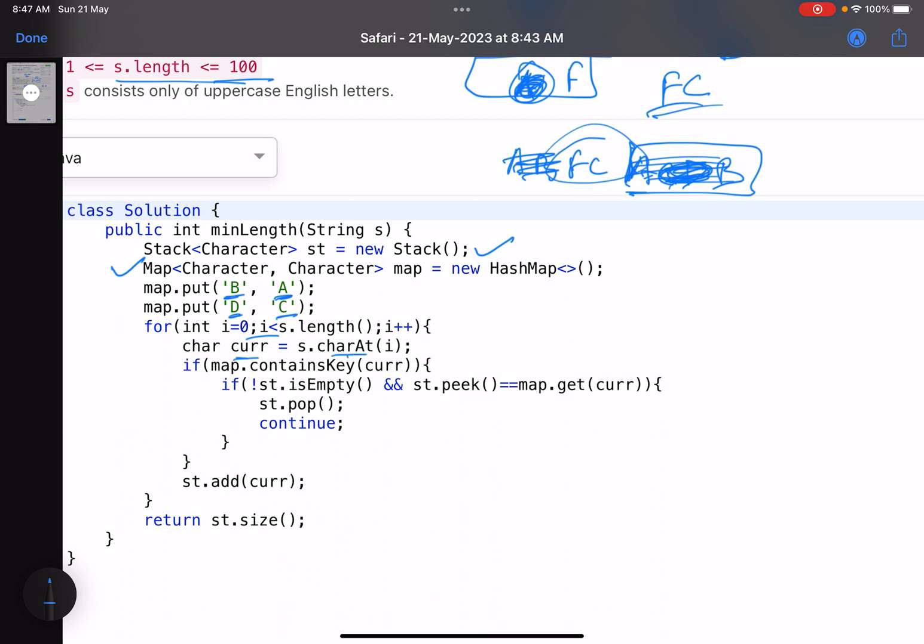I start traversing. I'll check what is my current character. Now if map contains my current character, that means if it is B or D, what I'll do: if my stack is not empty and the topmost character equals the required character, which is A in case of B and C in case of D, then just pop it and continue to the next character.